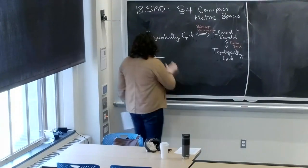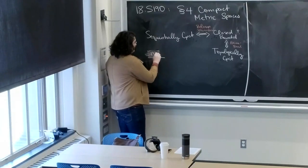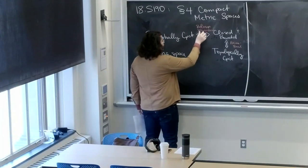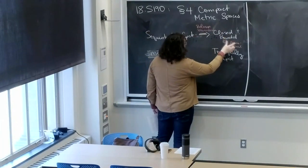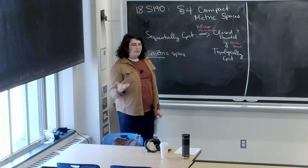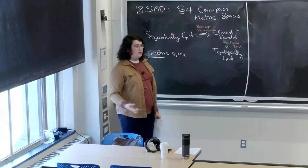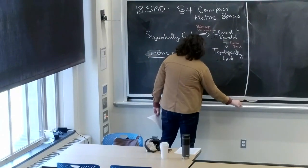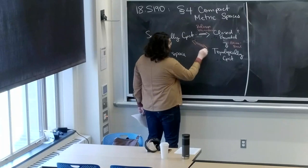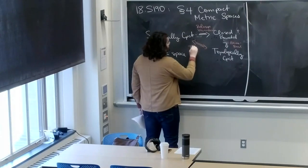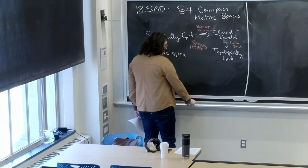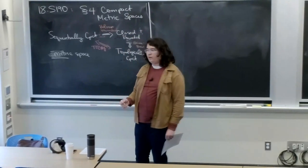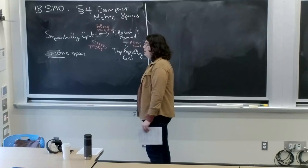What we're going to show today is that if we're on a general metric space, we still have the following implications. We already know that sequentially compact and topologically compact implies closed and bounded, which is helpful — if you want to show a metric space isn't compact, just show it's not closed or not bounded. But we're going to show that sequentially compact is the same as topologically compact. In fact, we'll show two more properties that emphasize the importance of compact metric spaces in general.